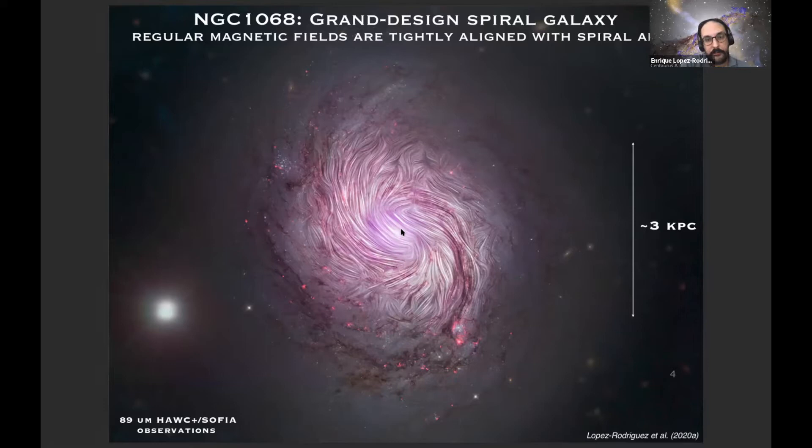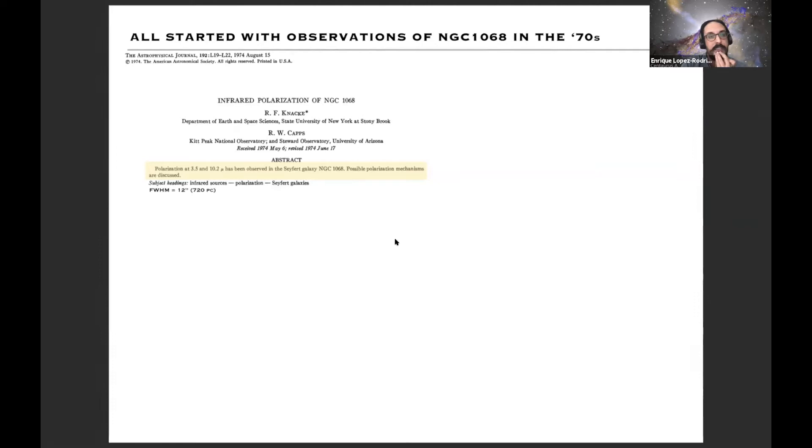If we focus on the central one kiloparsec, it's been observed back from the 70s. The first paper I found in the literature is back in 1974 where you have this abstract with two sentences, which I would love to write a paper like that, that says it's polarimetry at three and ten microns and the possibilities are all of the above because at this time polarization was not very well known in AGN.